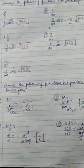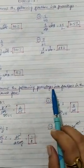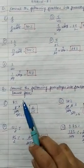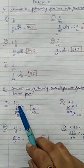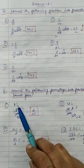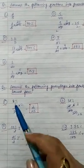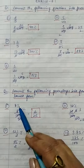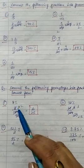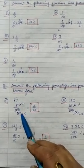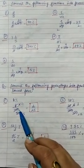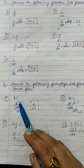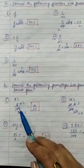Question number two — convert the following percentages into fractions in the lowest form. Percentage is given; we have to convert it into the lowest form. Whenever there is a percentage sign, we have to remove it and write upon hundred. So 8% becomes 8 upon 100.